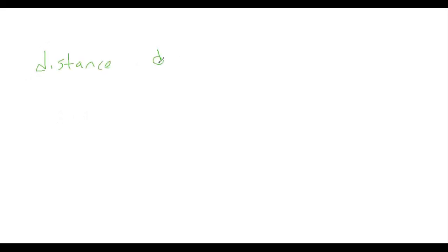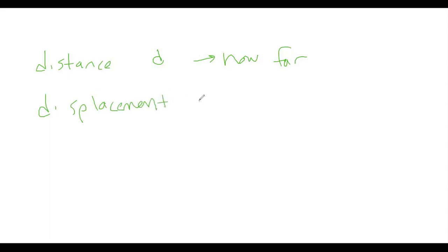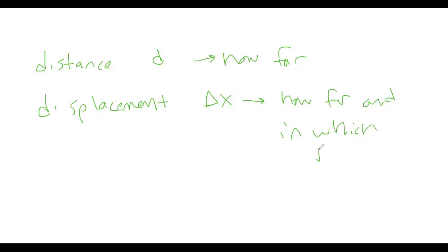If you watched the video like you were supposed to before class, we had a couple things we were dealing with. The first one is distance, and the symbol for distance is D — this is essentially how far you go. And then we have displacement, which is delta X, and that's how far and in which direction.